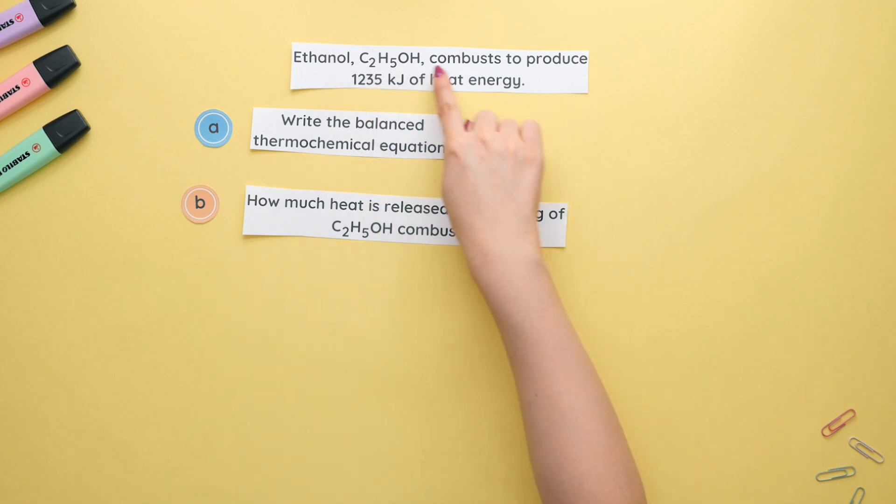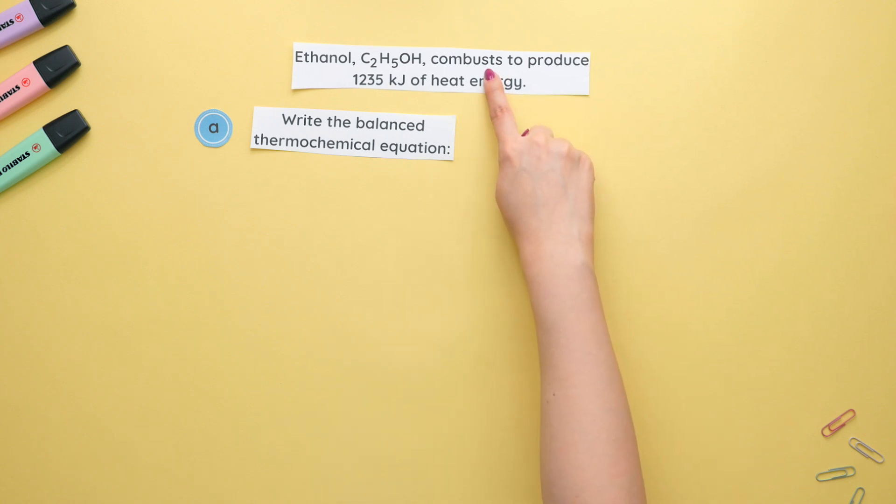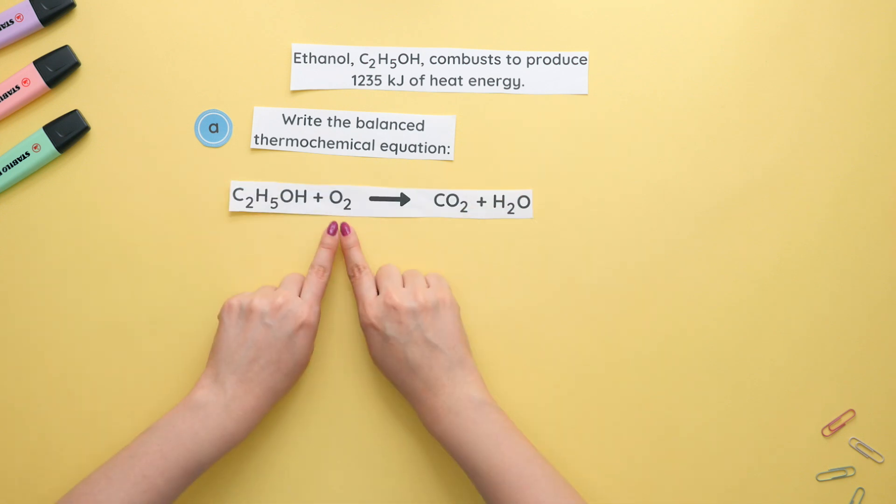We are told that ethanol combusts to produce 1,235 kJ of heat energy. We'll find the balanced equation first. The key word to figure out what type of reaction this is, is the word combust. That means this is a combustion reaction which always has O2 as our reactant and our products are always carbon dioxide and water.